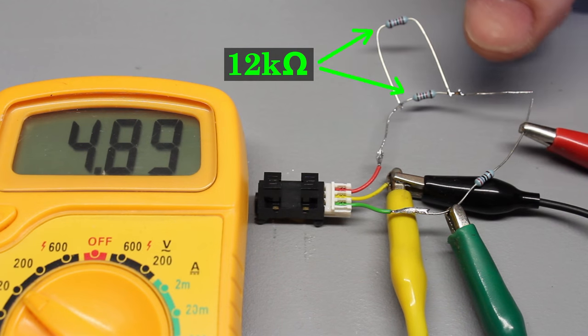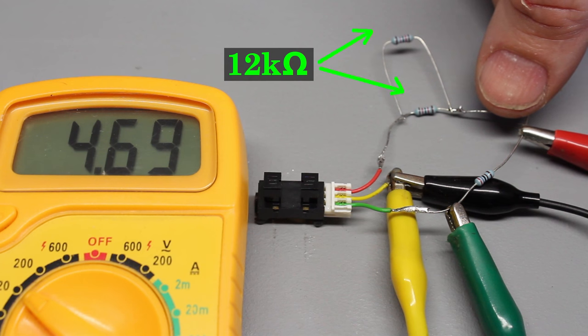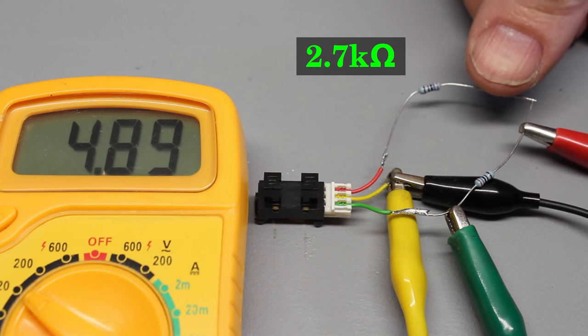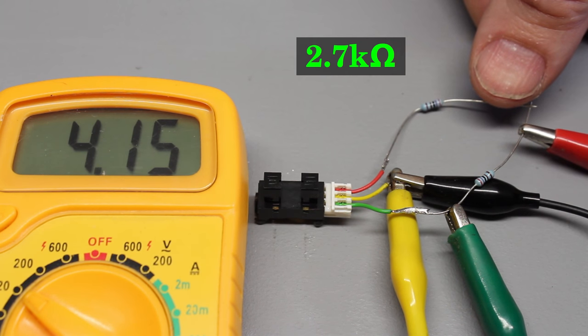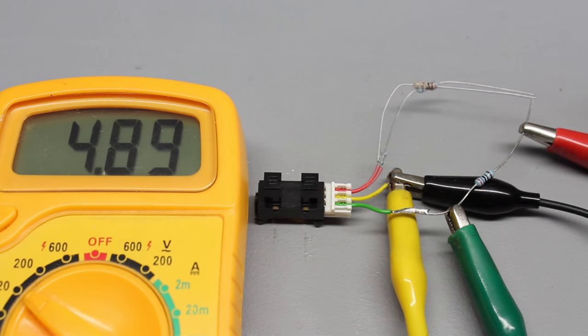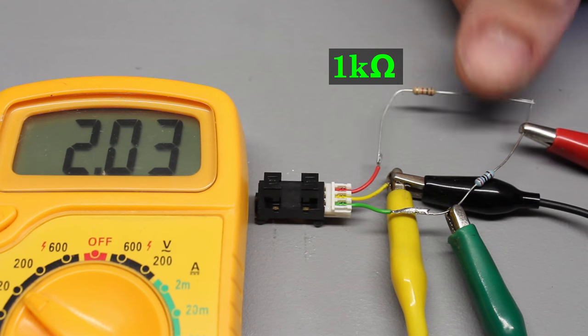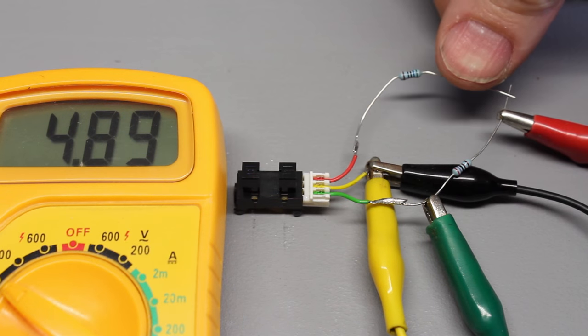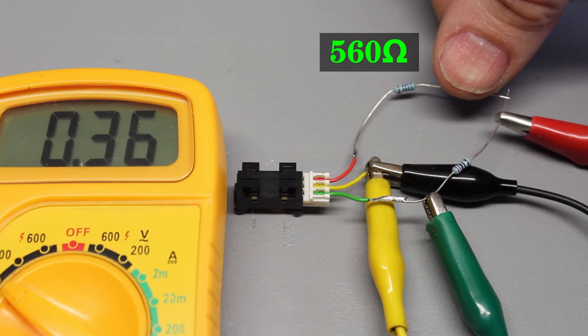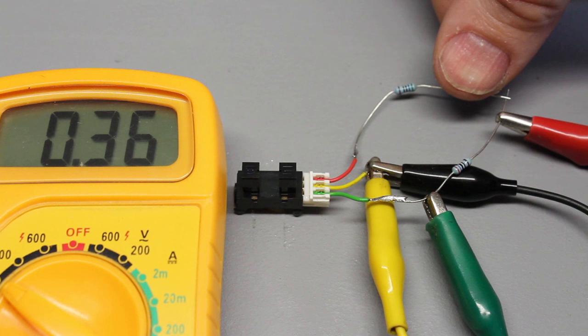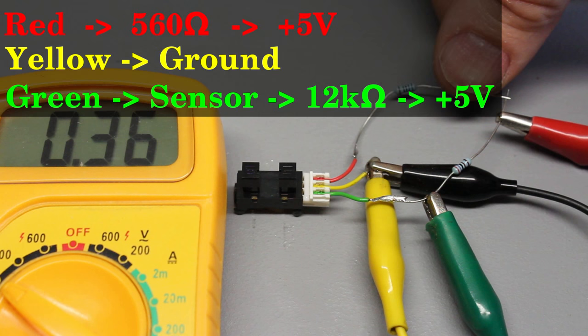Now the phototransistor is connected to plus 5V through a 12 kiloohm resistor, while the resistance value at the LED side is lowered until we get a reading of less than 0.5V across the receiver. That's a safe configuration for this sensor type at 5V supply voltage.